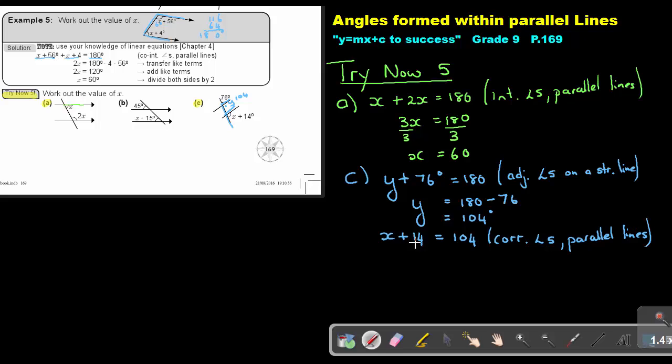To find the value of X, it's going to be 104 - 14. So the value of X will be 90 degrees. 90 + 14 will give me an answer of 104 degrees.